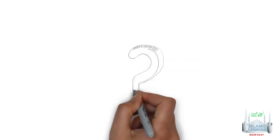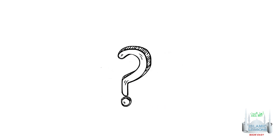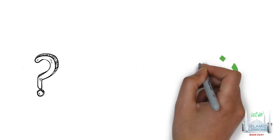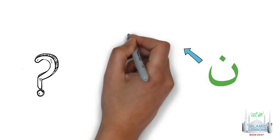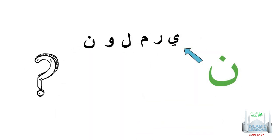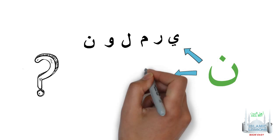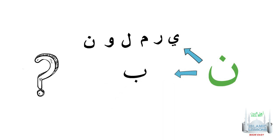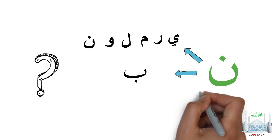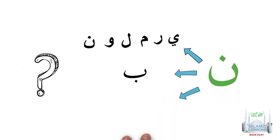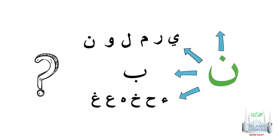So how do we remember all these letters of ikhfa? A simple way is like this: you should already know the yarmaloon letters when it comes to a noun sakin. You should also know that if the letter ba follows a noun sakin, it changes. All you have to do is memorize the letters that need to be pronounced clearly — the rest of the 15 letters are ikhfa.